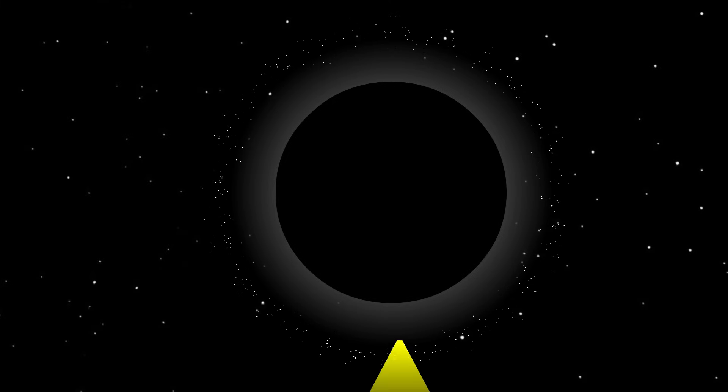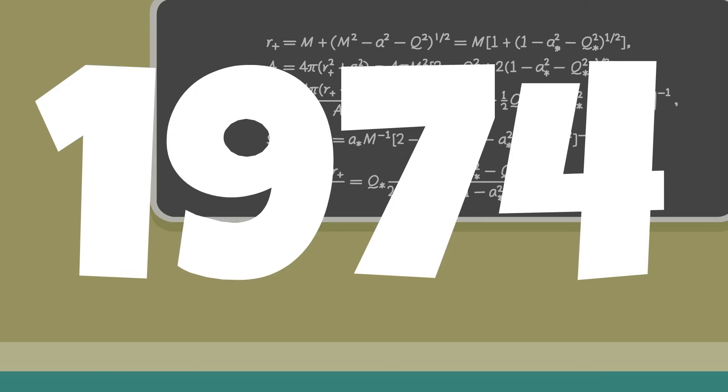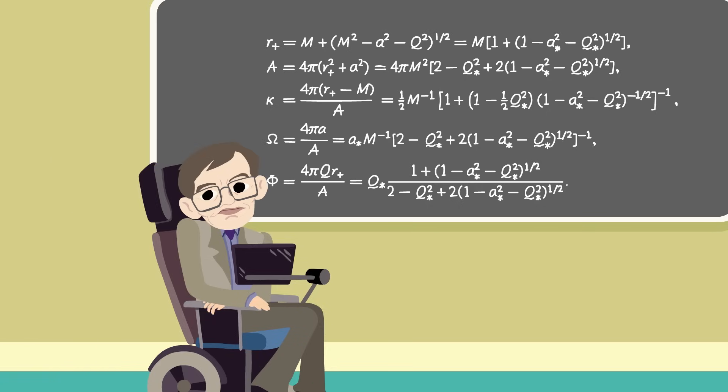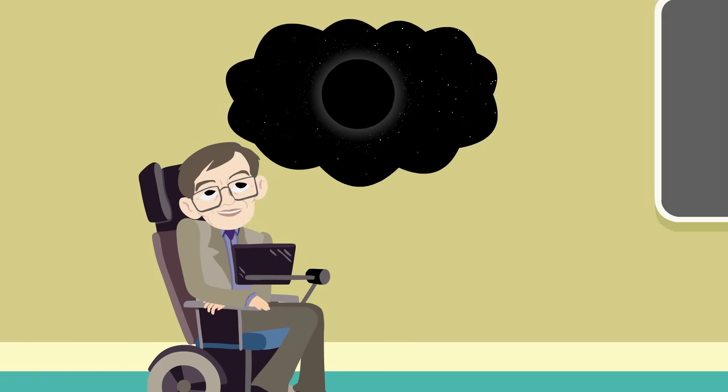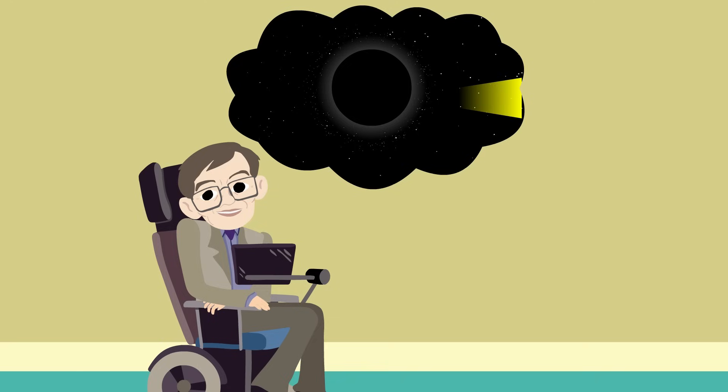In the initial days of space research, it was believed that black holes were space objects into which things could enter, but never leave. However, this all changed in 1974, when Stephen Hawking proposed a groundbreaking theory regarding a special kind of radiation, which later became known as Hawking radiation.